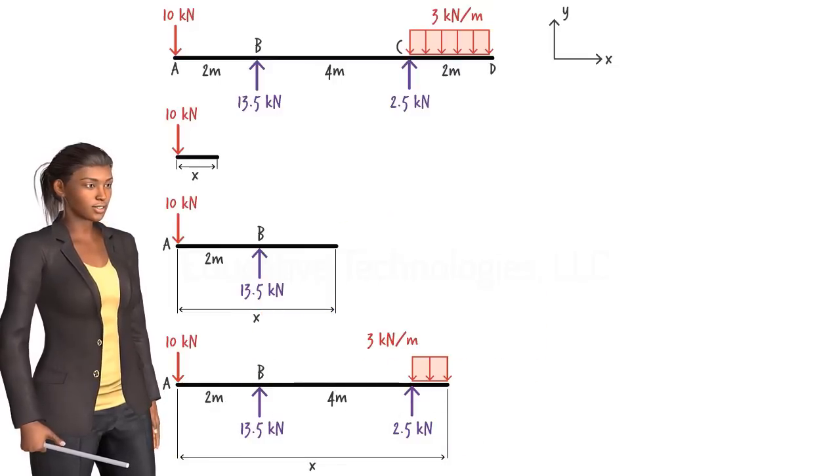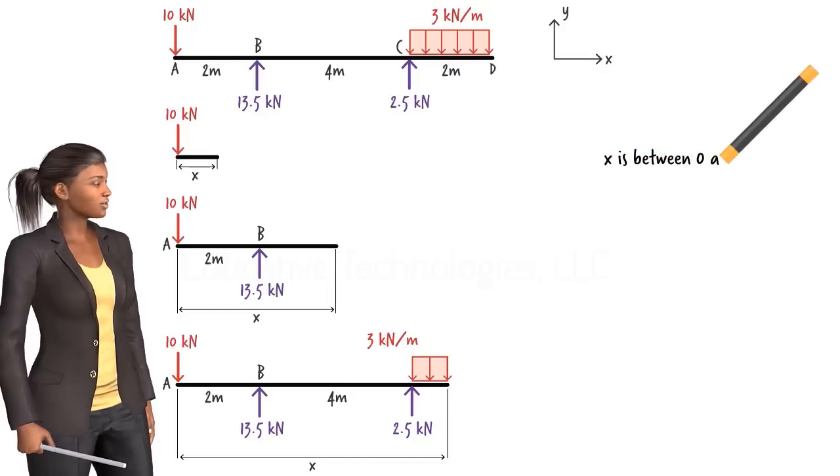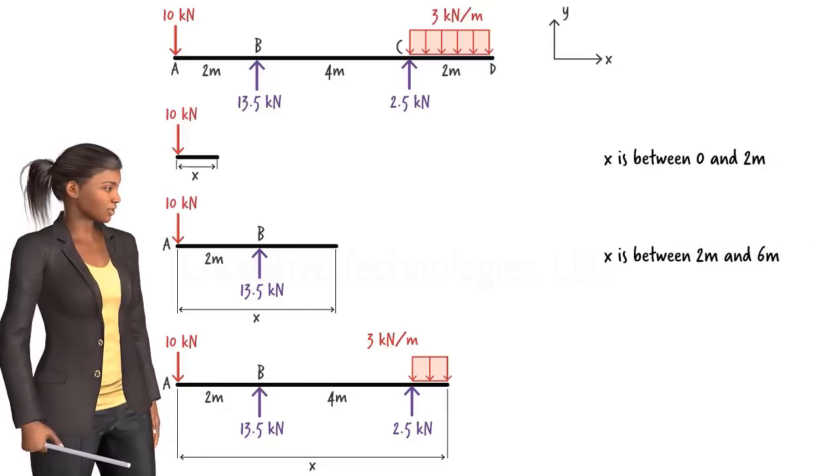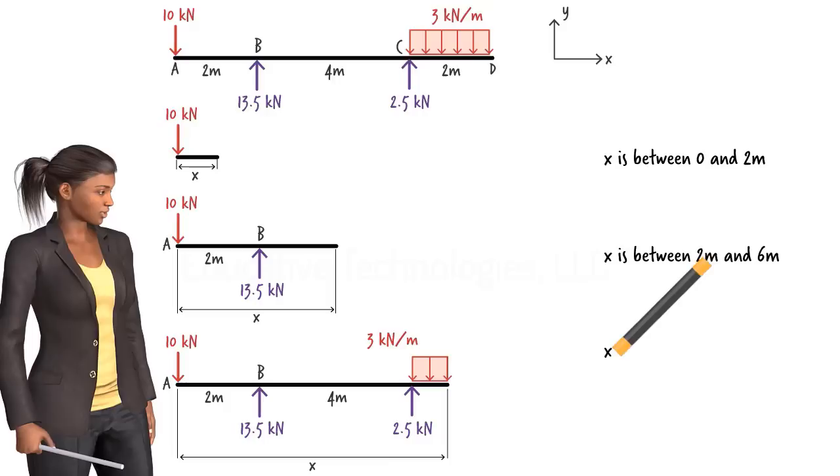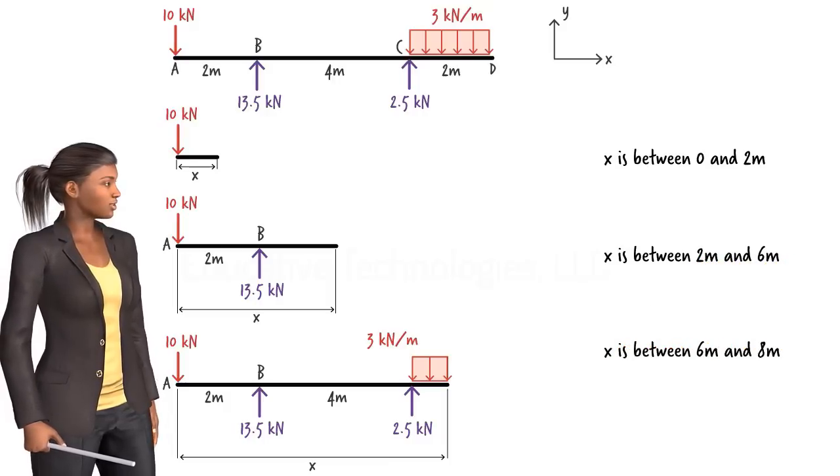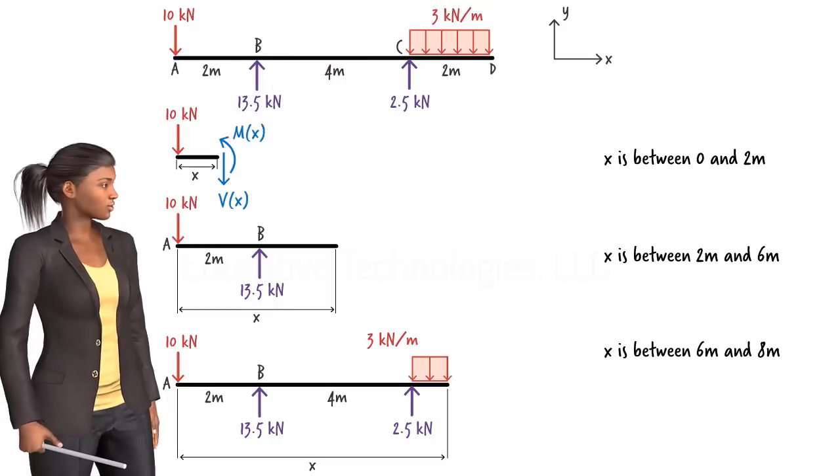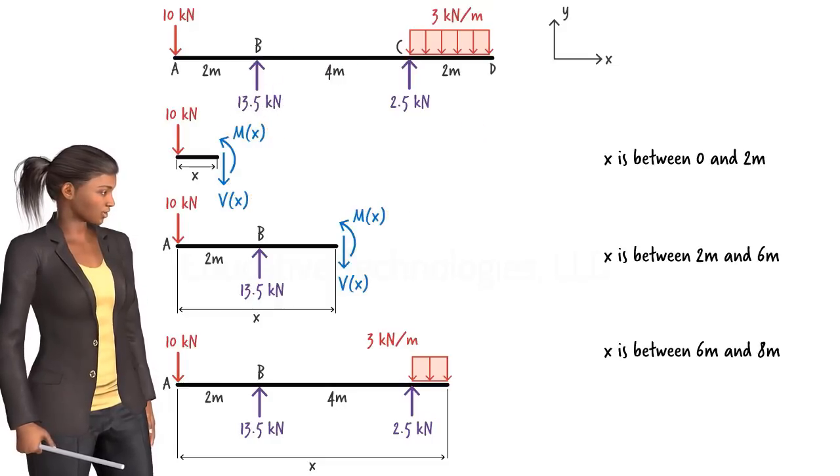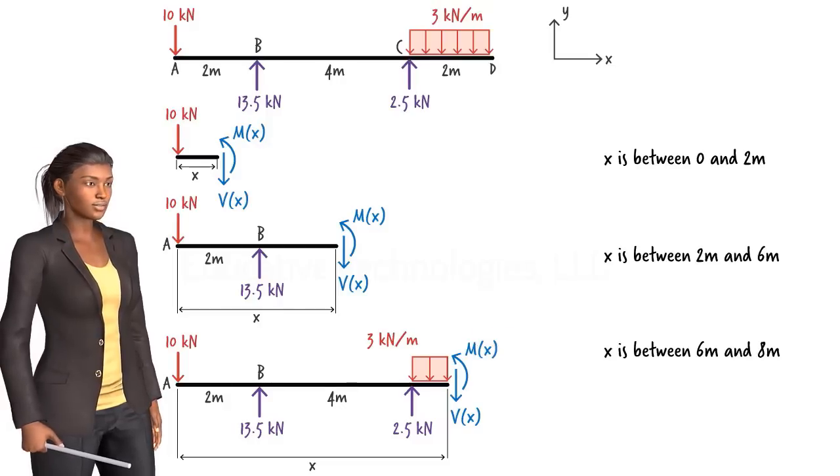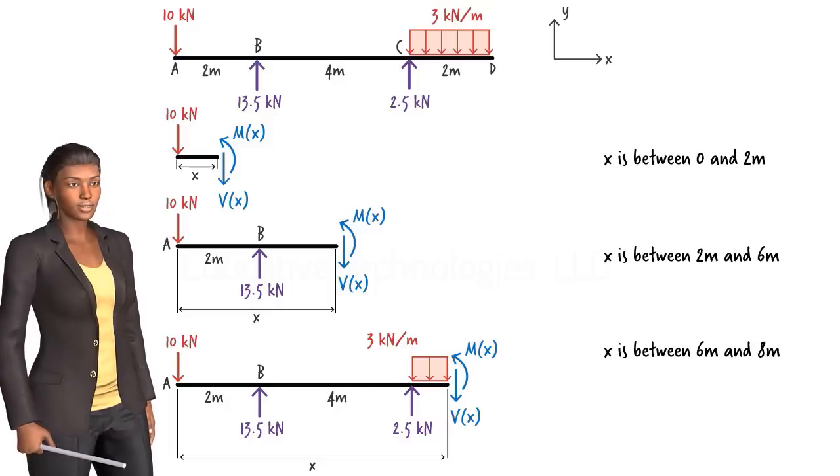For the first segment, X is between 0 and 2 meters. For the second segment, X varies between 2 and 6 meters. And for the third segment, X lies in between 6 and 8 meters. At the cut point, we have a shear force and a bending moment. We label them VX and MX respectively. This notation suggests that the shear and moment at an arbitrary point in the beam can be written in terms of X.